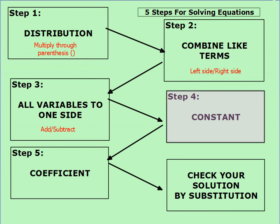Step five has to do with our coefficient. The coefficient is a number that's being multiplied to a variable. To undo multiplication, we use division — the opposite operation. So our last step in solving any linear equation is to divide by the coefficient. A quick FYI: sometimes you'll have coefficients that are fractions, and dividing by a fraction is the same as multiplying by its reciprocal, so fraction coefficients can be a little tricky.